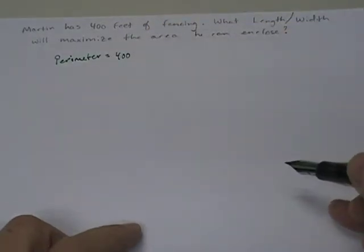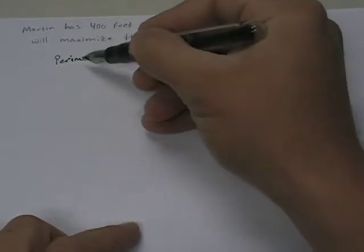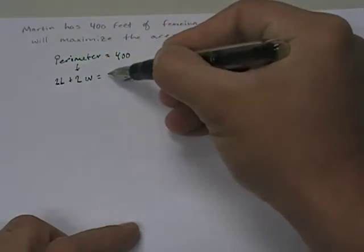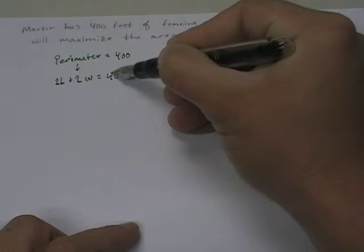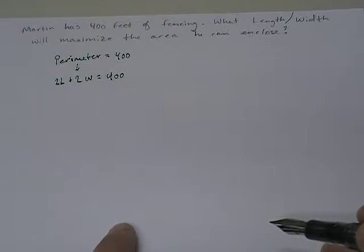The first thing we've been told is that the perimeter of our fence is 400 feet, and we were told that because he has 400 feet of fencing. We know there's a formula for perimeter: 2L plus 2W, and we know that equals 400. So that's the first piece of information we've been given.